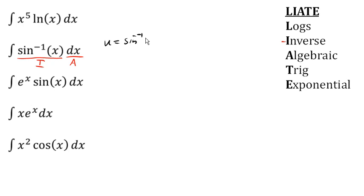And dv would equal dx. So then du would be 1 over square root of 1 minus x squared, dx.